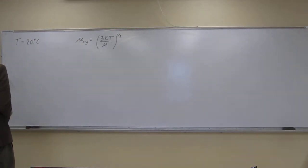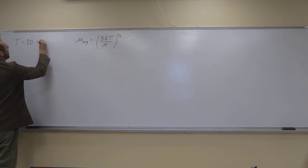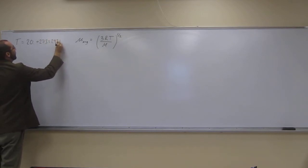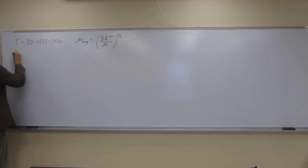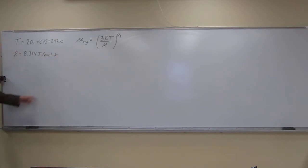So we need to know all this stuff. T has to be in Kelvin, so plus 273 would be 293 Kelvin. R, well, that's going to be the 8.314 joules per mole Kelvin, so that gives you a clue as to what temperature you got in here.